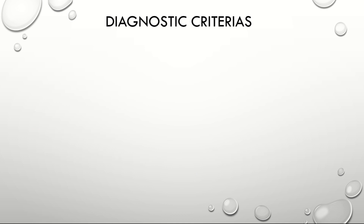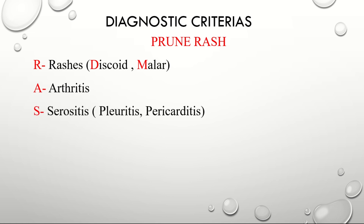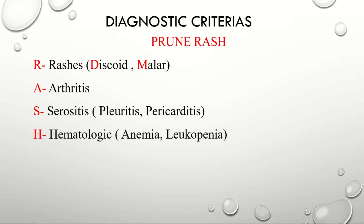Now coming to 'RASH': R is for rashes — there are two types: discoid rashes in the shape of a disc, and malar rash in the shape of a butterfly. A is for arthritis, typically seen in the hands and knee joint. S is for serositis, inflammation of the serous membrane, manifested as pleuritis or pericarditis. H is for hematologic manifestations such as anemia and leukopenia.